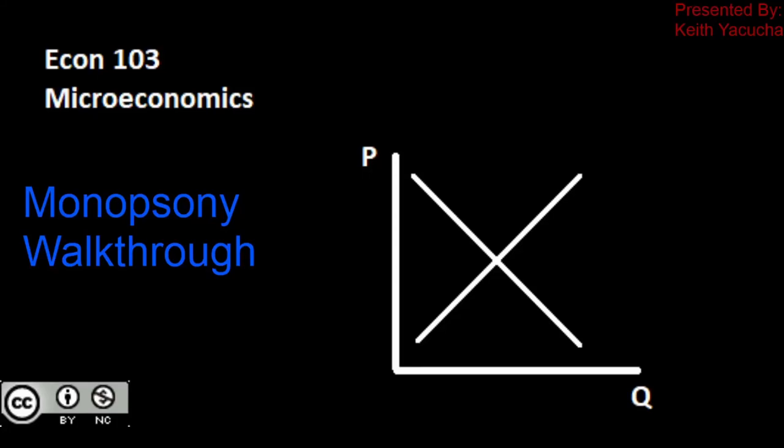Welcome back to Econ 103, Introduction to Microeconomics. In this video, we're going to be taking a look at monopsony and a specific example of a monopsony, walking through how to calculate our optimal quantity.